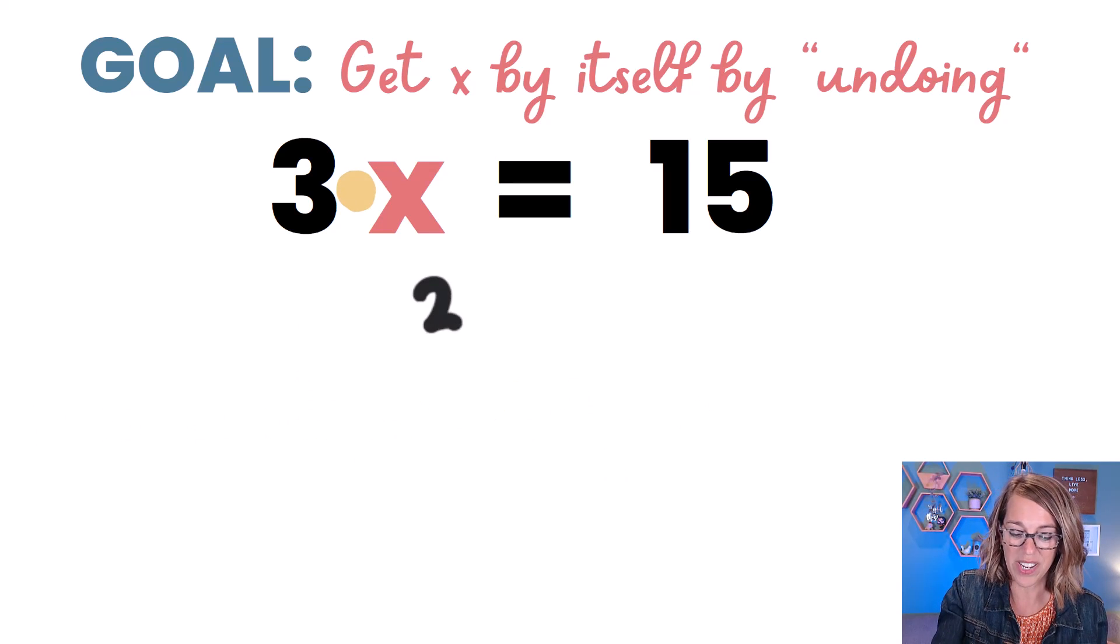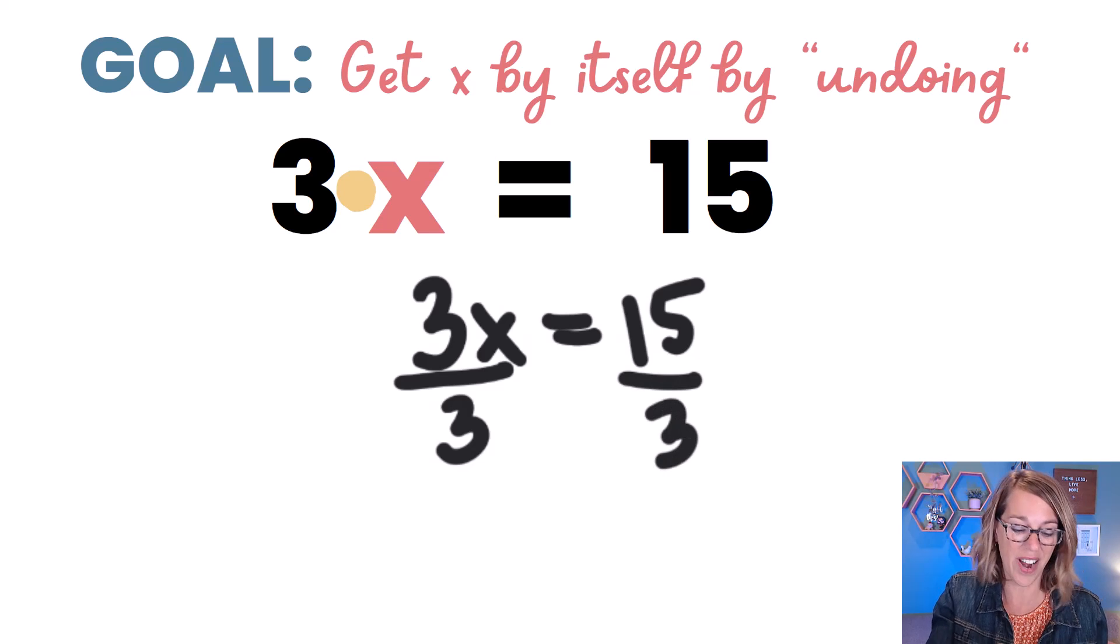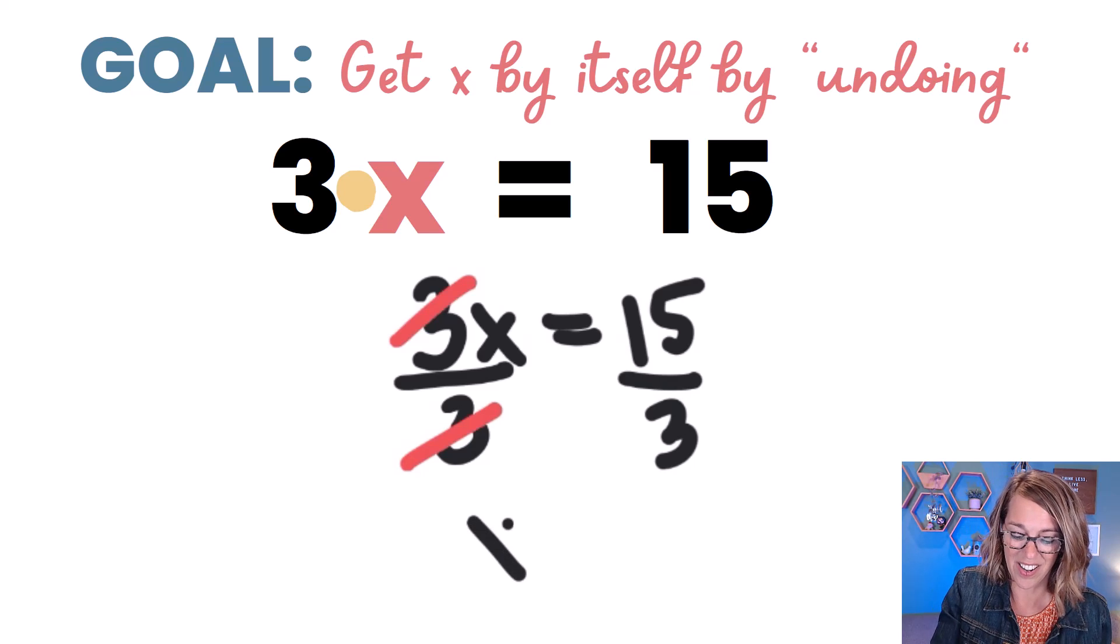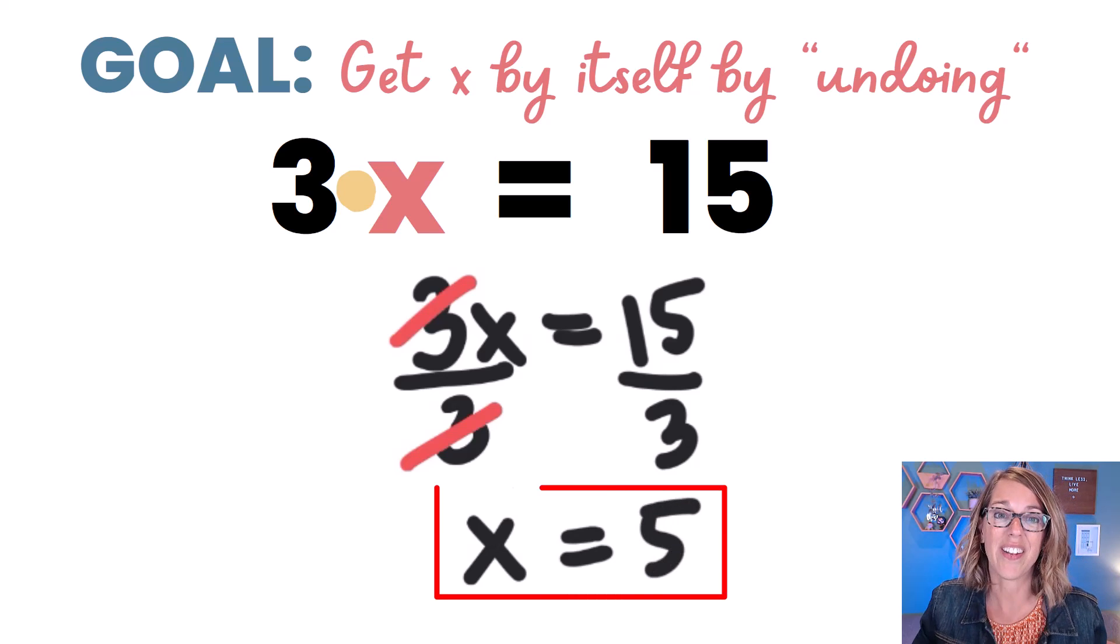So let's go ahead and take that 3 times x equals 15. And I want to divide both sides to keep it balanced by that 3. So if I divide the left-hand side by 3 and the right-hand side by 3, I can cancel the two 3s, and I end up with an x on the left-hand side. 15 divided by 3 is equal to 5, and 5 is our solution.